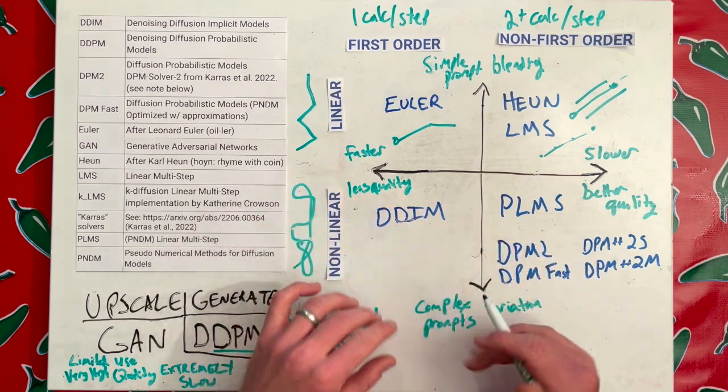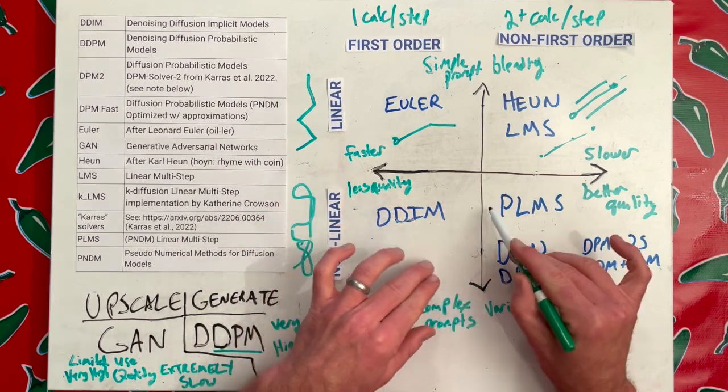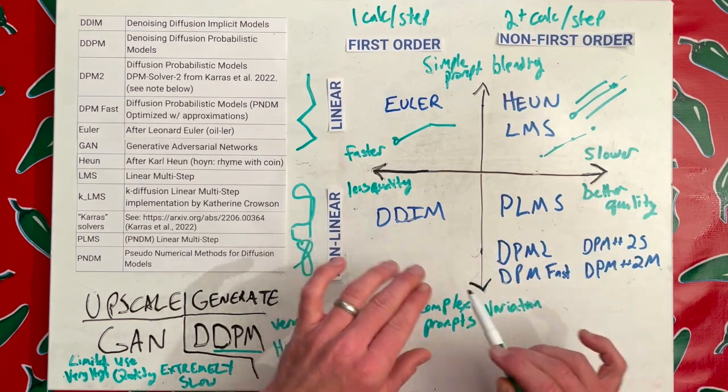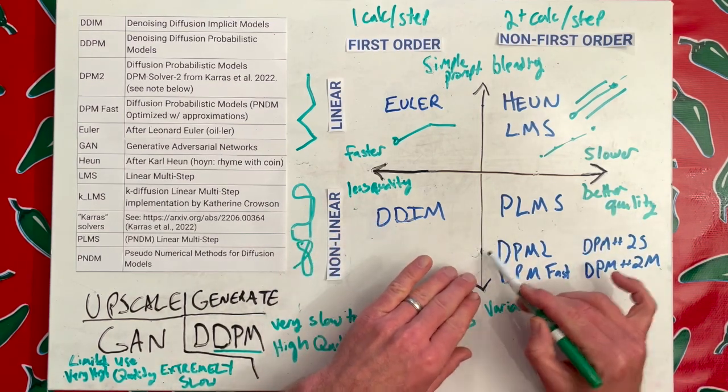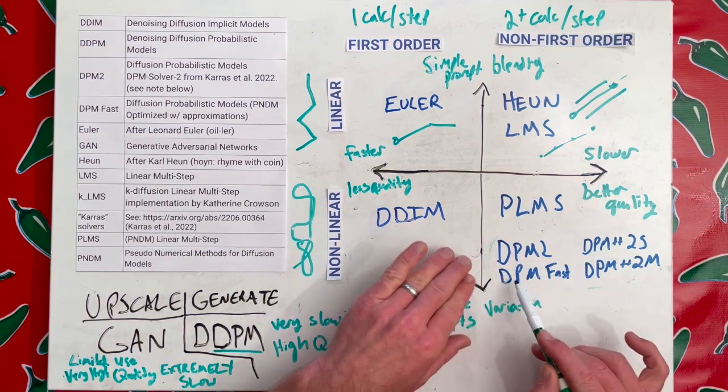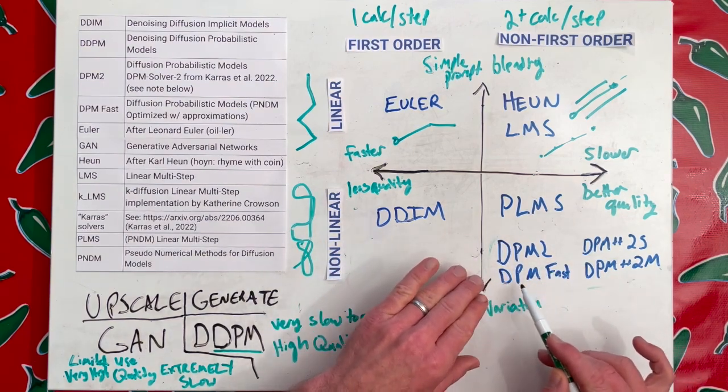A DDIM is a single pass, much like a Euler, it's a forward pass, whereas the DPM family is DDIM, but a forward and a reverse step. That is where these things get better quality at, again, a cost of more calculation.